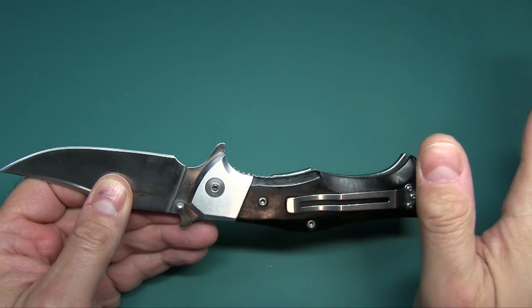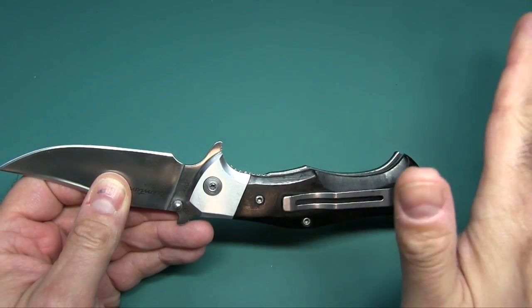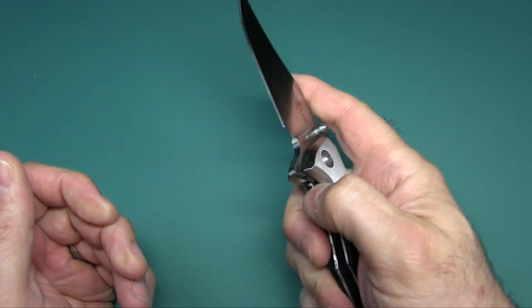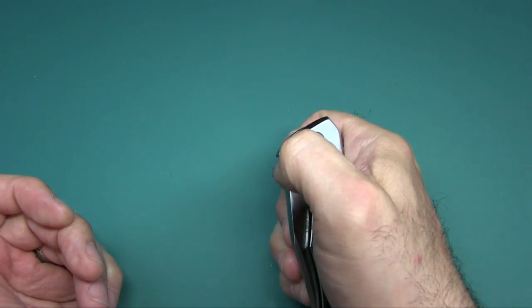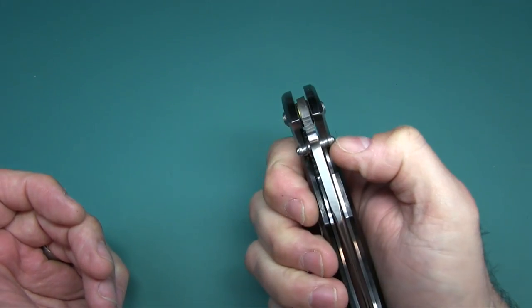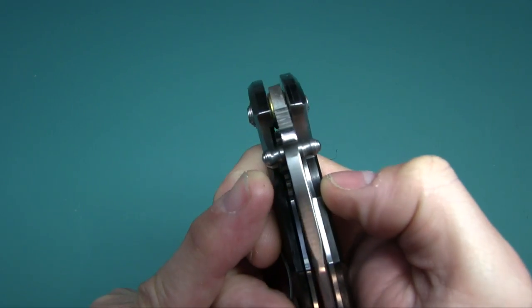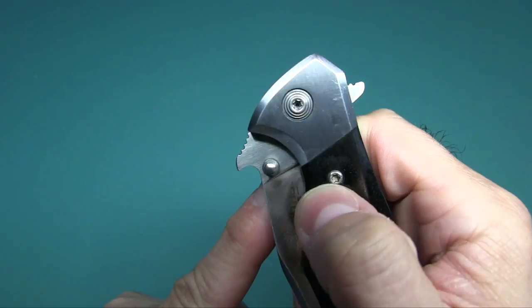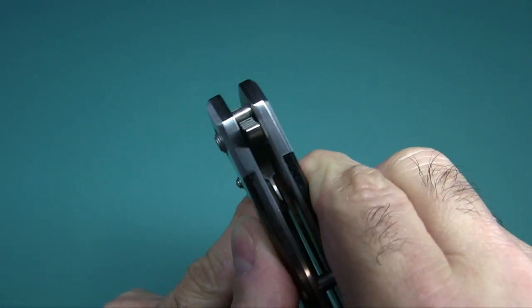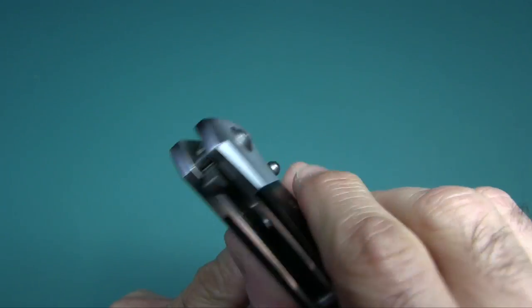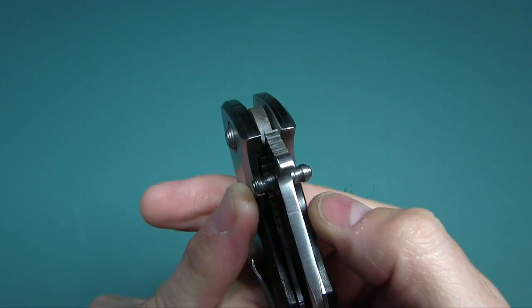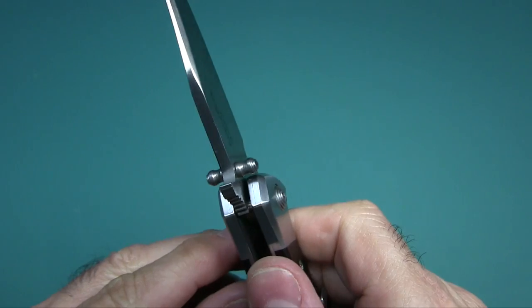Let's talk about deployment of this knife. There are three ways you could deploy this knife, which is pretty cool. You have the standard method, or the most standard method, which is thumb studs. You have ambidextrous thumb studs. They're kind of unique looking, not your standard step pyramid type. They're sort of like a barbell.